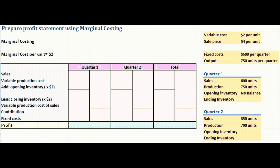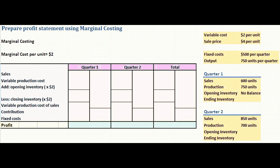I've copied the given information to a new sheet. We will calculate the profit for quarter one, then quarter two, and then the total for both quarters. The marginal cost per unit is $2, which is simply the variable cost provided. We use variable cost as the marginal cost because inventory is valued at variable cost.